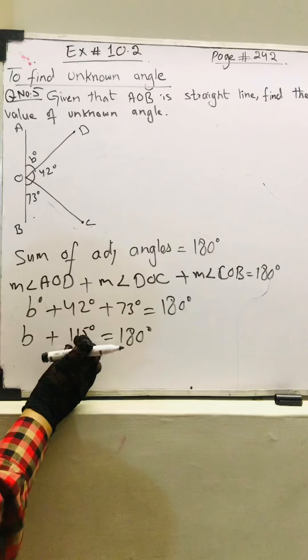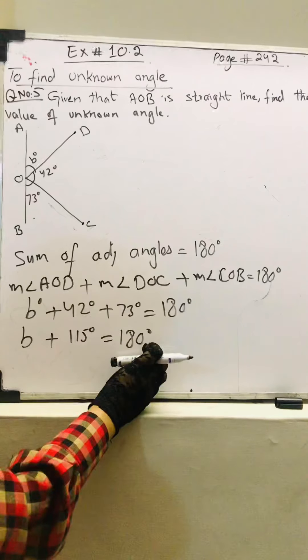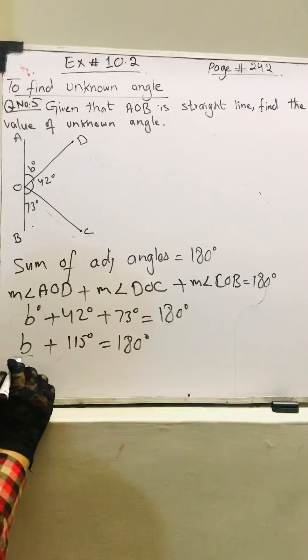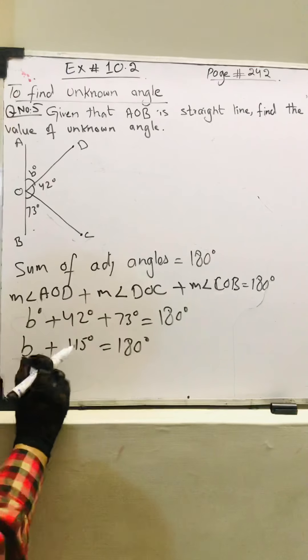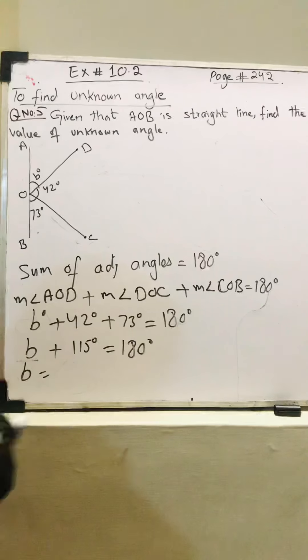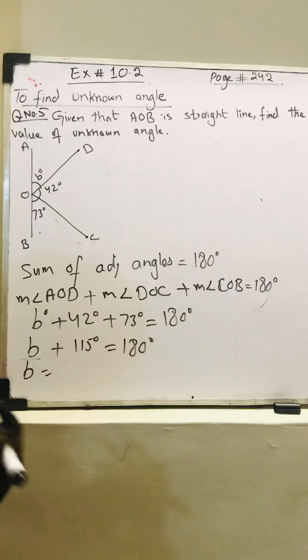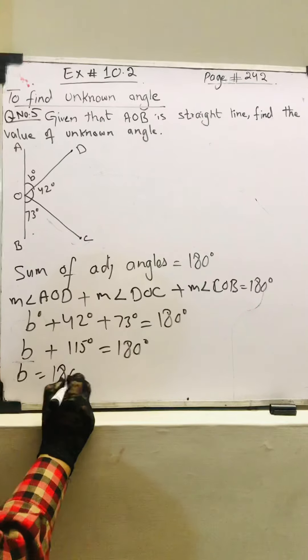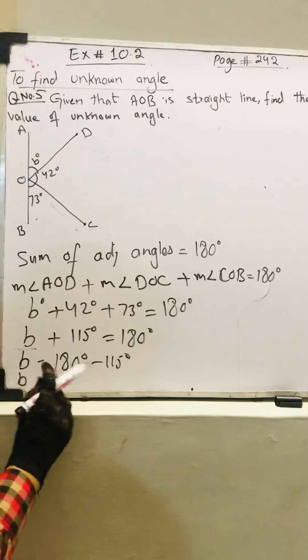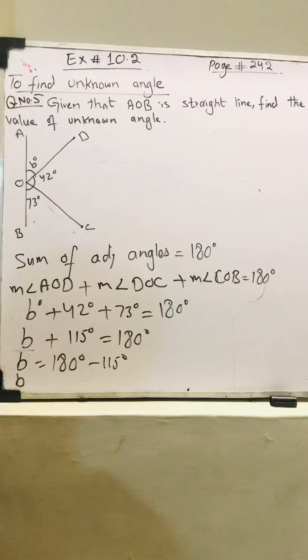Now I have to shift this 115 degrees from here to there because I need this constant. When I shift 115 from the left side to the right side, the sign of plus will convert to the sign of negative. It is a formula or rule.